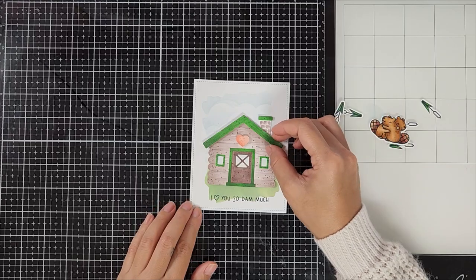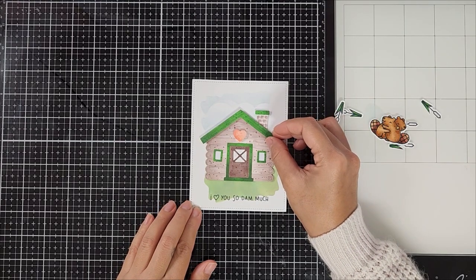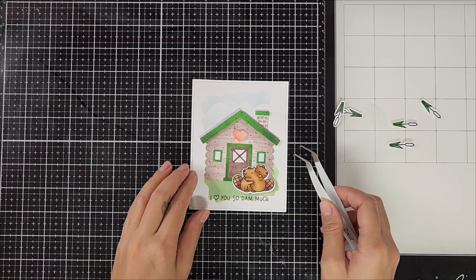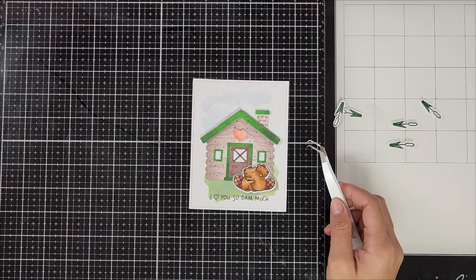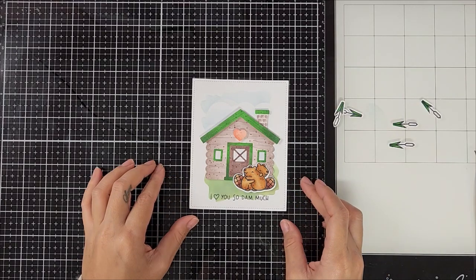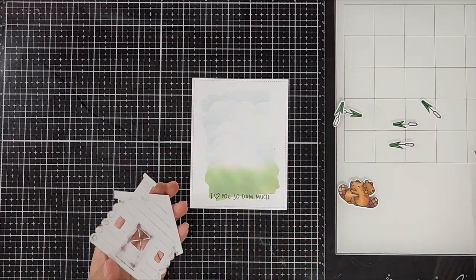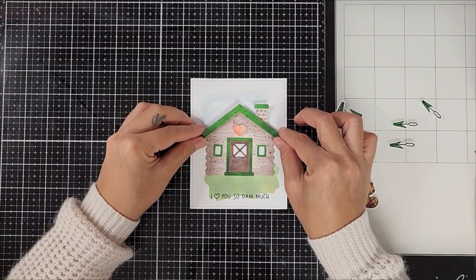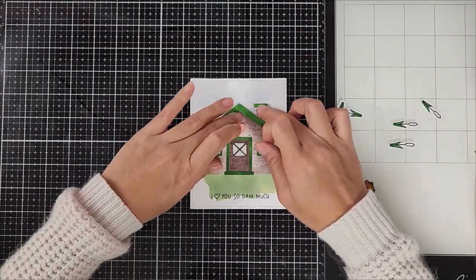Now it's time to try to figure out a placement for everything. So here I'm going in with the cabin and the beaver and also the cattails. I'm just trying to figure out a layout. Once I was happy with the layout, I went ahead and added liquid adhesive along with foam squares and placed that on top of the card panel.